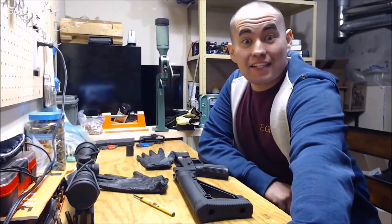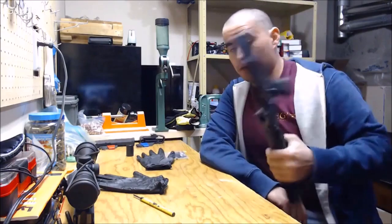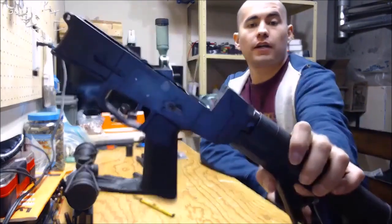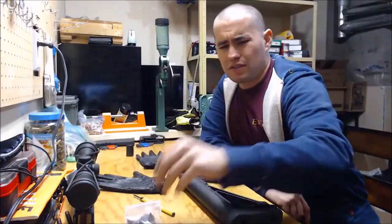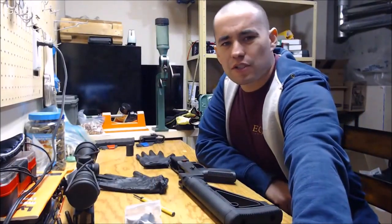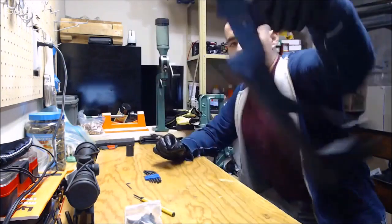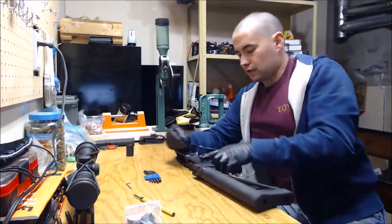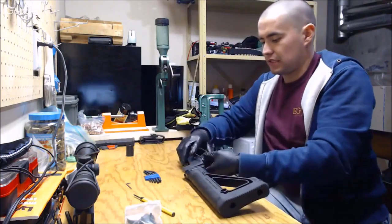Hi, let's get this party started. I already took the lower off the rifle and I'm going to be getting rid of the factory trigger with this Rise Armament super sporty trigger. First things first, you've got to make sure that you take off the safety. This does not come off like the safety in an AR-15. You have to pop out this little key here.